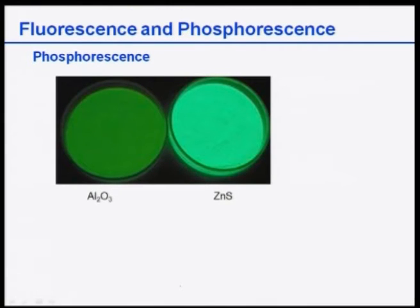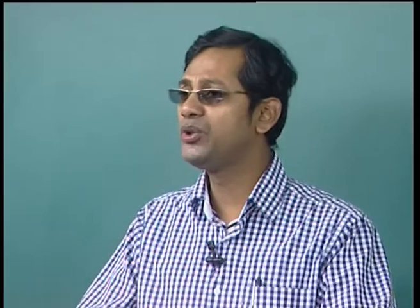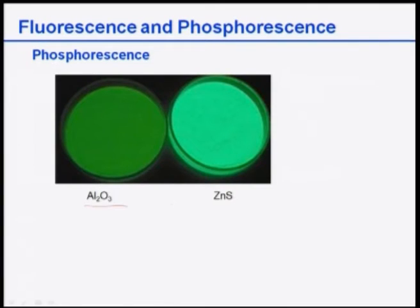An example of phosphorescence: zinc sulfide is used as a phosphor screen. In transmitting electron microscopes, electrons fall on the phosphor screen, excite electronic transitions, and the emission is visible. Here, aluminum oxide and zinc sulfide are on a Petri dish in a dark room: aluminum oxide does not phosphoresce, but zinc sulfide shows phosphorescence. Many minerals exhibit this photoluminescence behavior.